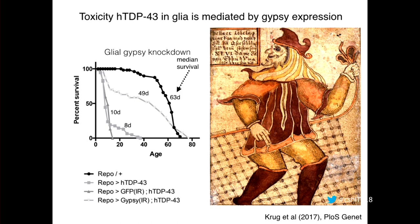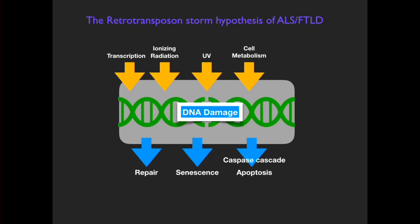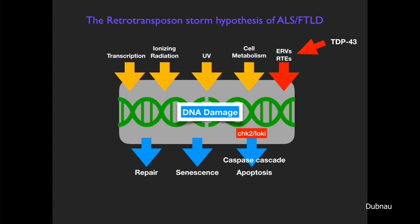It is known that in the germline context, reducing CHK2 signaling partially ameliorates the toxicity of retrotransposon expression. When we knock down Loki, we see remarkable restoration of lifespan in animals with this aggressive TDP-43 pathology. At that time, we proposed that TDP-43 interfered with silencing mechanisms, giving overexpression of endogenous retroviruses and retrotransposons — particularly GYPSY — that GYPSY must be causing DNA damage, and that this was leading to DNA-damage-mediated apoptosis, because knocking down CHK2 restores a lot of function to these animals.